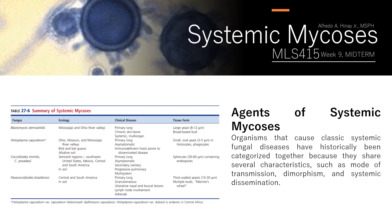For agents of systemic mycosis, you can refer to Mehon's table 27.6, which summarizes your systemic mycosis. For the purpose of this video lecture, we will solely use Mehon for your quiz. The fungal agents included by Mehon are: Blastomyces dermatitidis, Histoplasma capsulatum, Coccidioides imitis, Coccidioides posadasii, and Paracoccidioides brasiliensis.